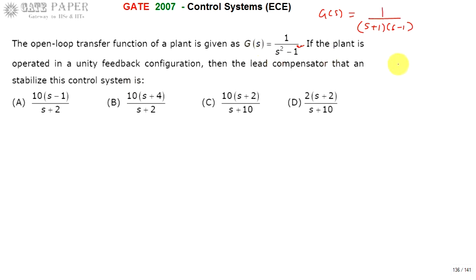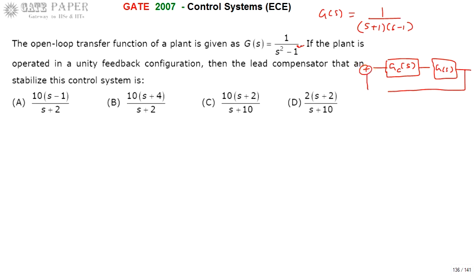If you are using a lead compensator, it is treated as gc(s). The lead compensator transfer function gc(s) is placed in series with the open-loop transfer function g(s), and the output is used in a unity negative feedback system. The closed-loop system consists of unity feedback where h(s) = 1, along with the lead compensator and the given open-loop transfer function.